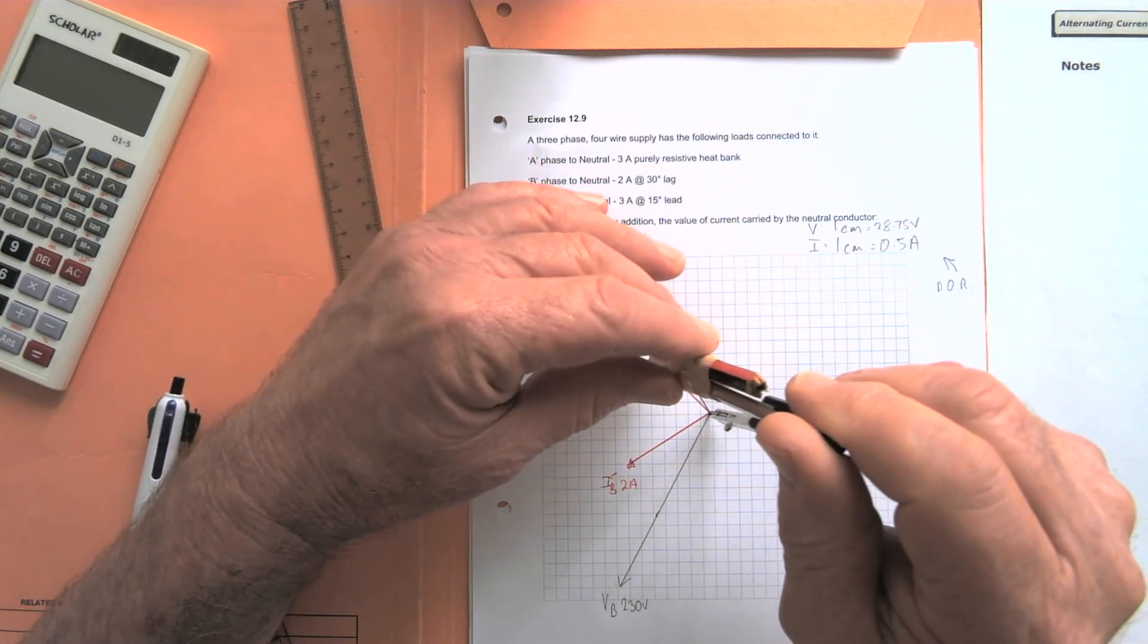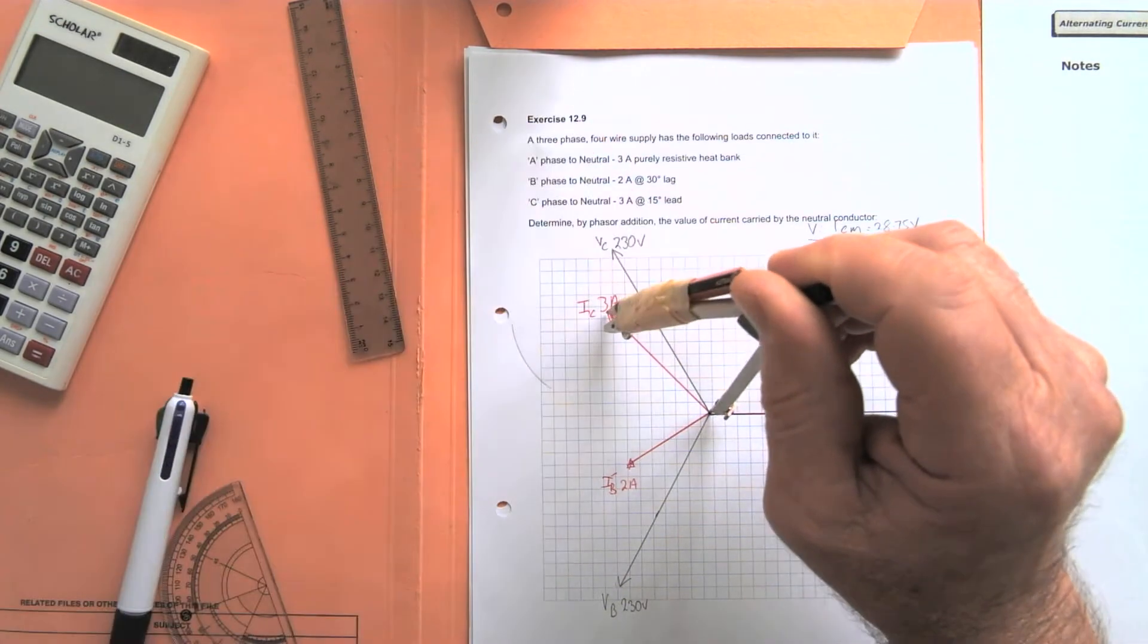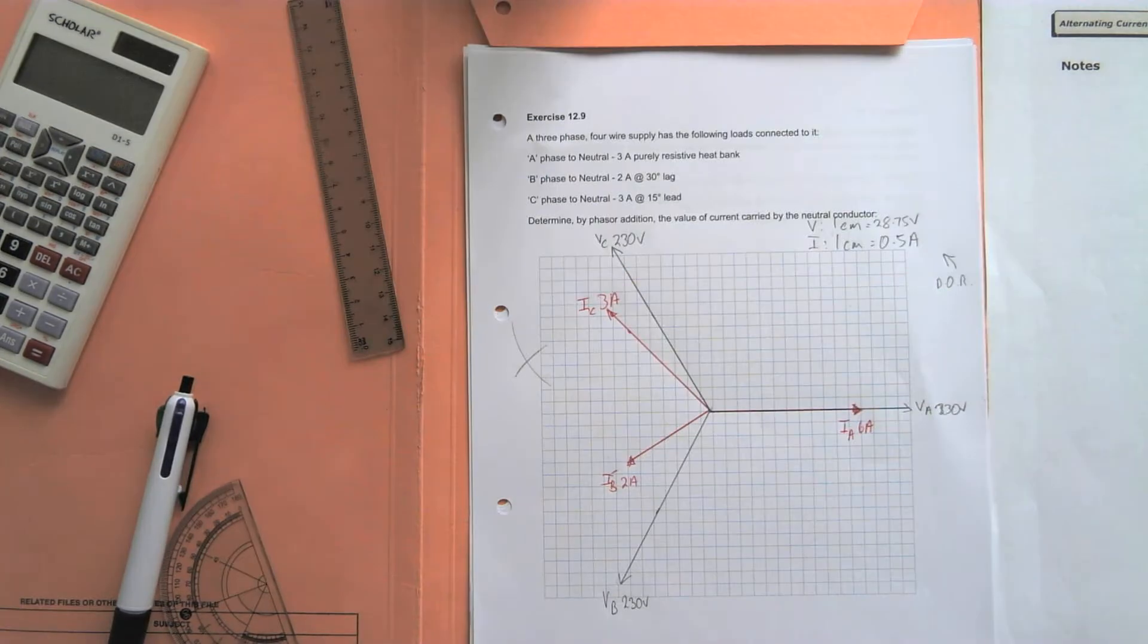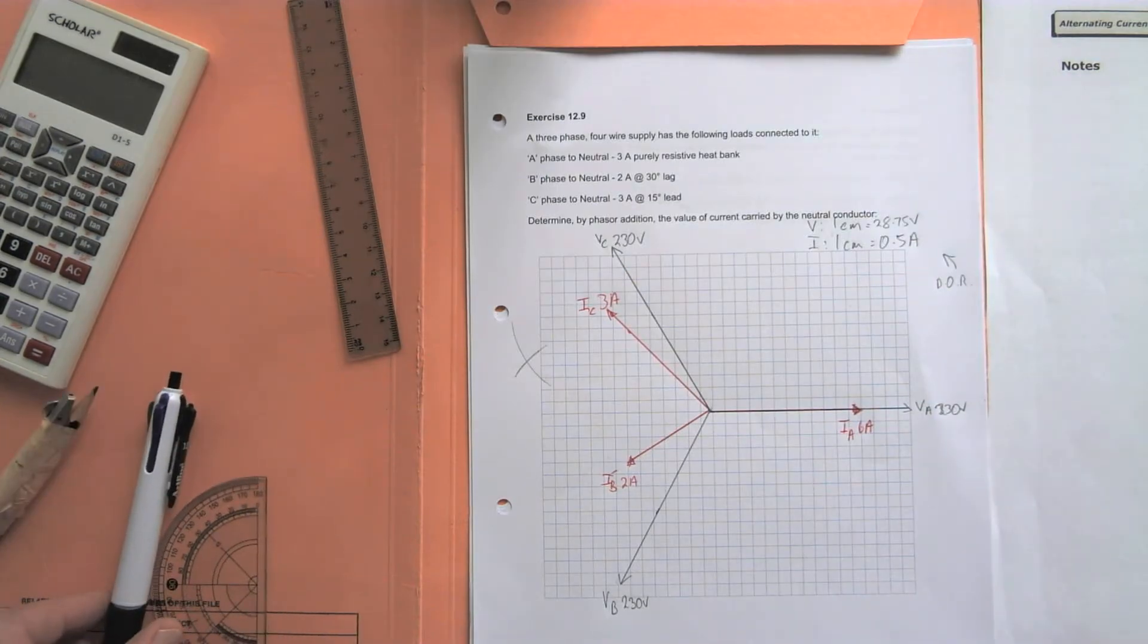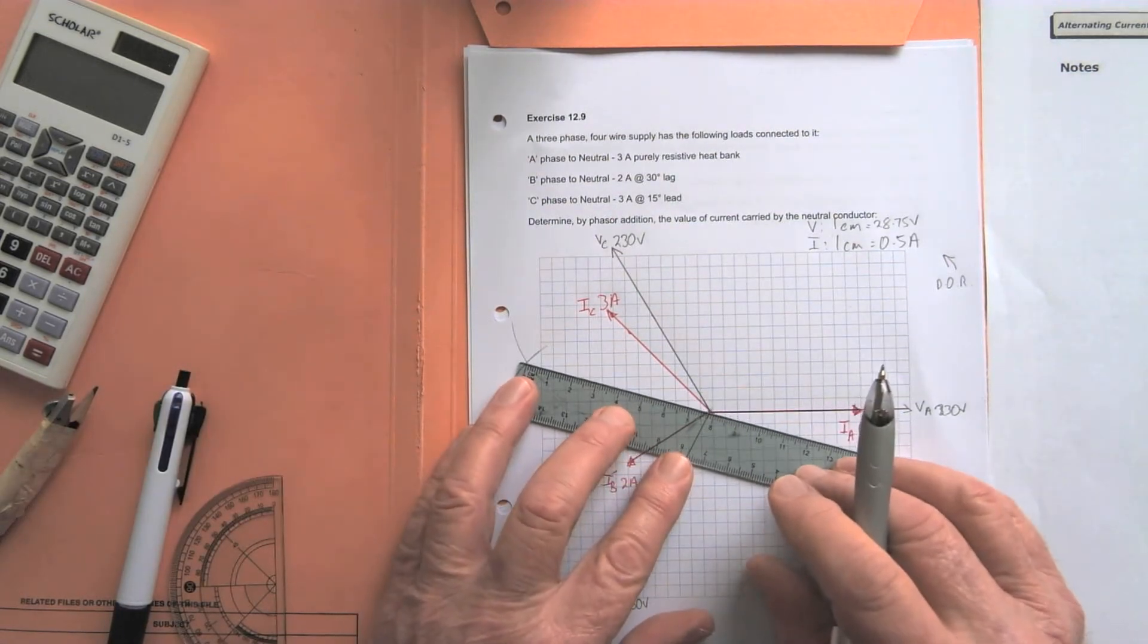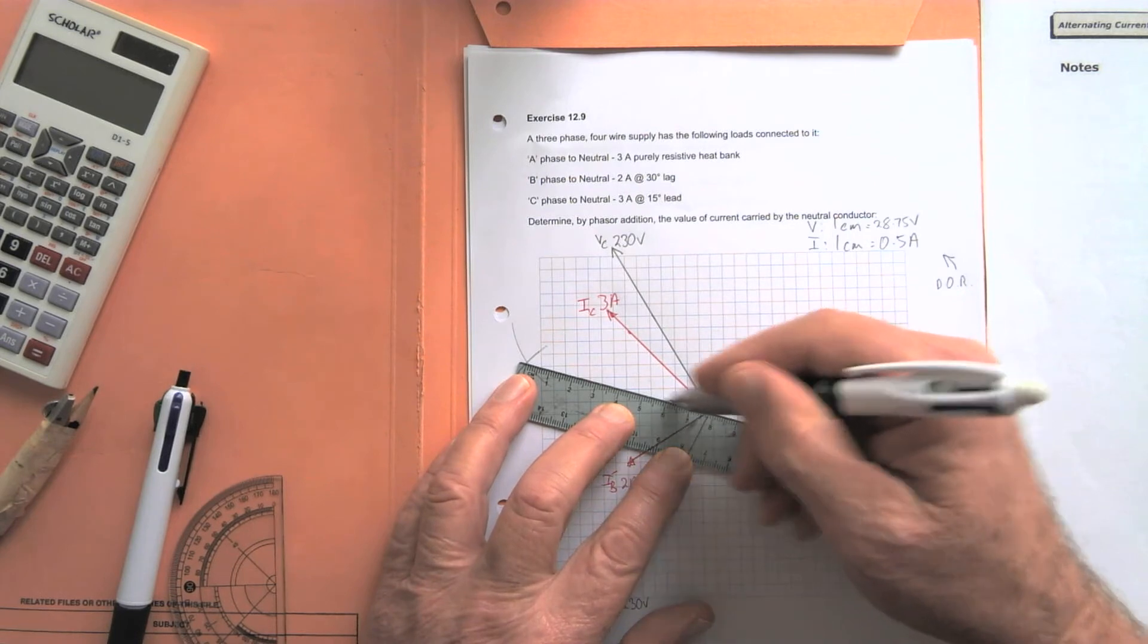And now the length of IC is added to the tip of IB. Scribe an arc, and where the two arcs intersect is the resultant of IB plus IC back to the star point there.